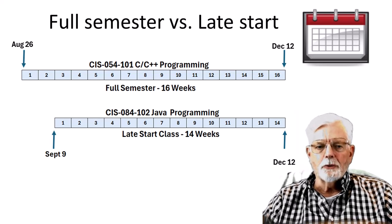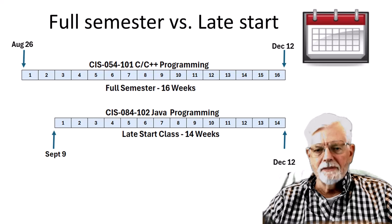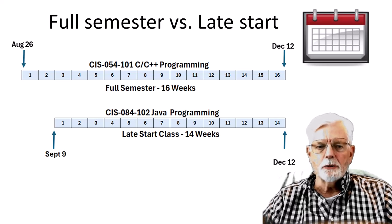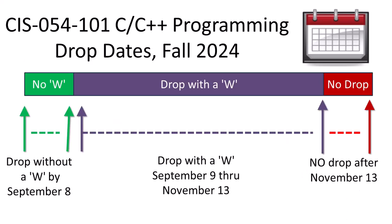This presentation only covers the drop dates for the classes I am teaching. There are other late start classes on campus that may have different start dates and different number of weeks — get those drop dates from the instructors who teach those classes. For C C++ programming, you can drop by September 8 and nothing will show on your transcript. If you drop by November 13, a W will show on your transcript. After November 13, you cannot drop and a letter grade A, B, C, D, or F will be submitted based on your completed work.